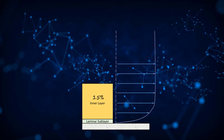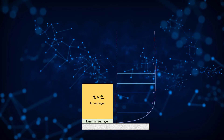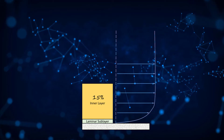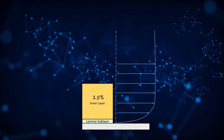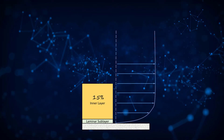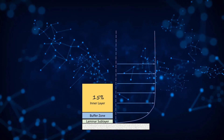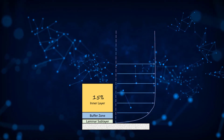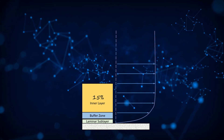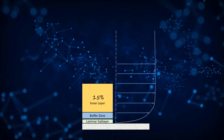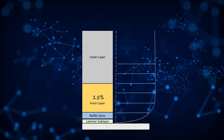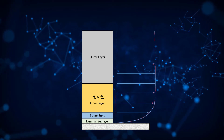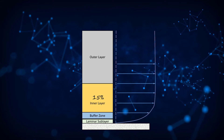The first zone is the laminar sublayer — the zone closest to the wall. It is so named because of the highly viscous nature of the flow in this region, which forces the flow to be laminar. The second zone is the buffer zone, a transition region where the viscous forces from the laminar sublayer still play a role, but the turbulent nature of the flow starts to kick in. Beyond the near wall is the outer layer, where turbulence effects dominate and the influence of viscosity is negligible.